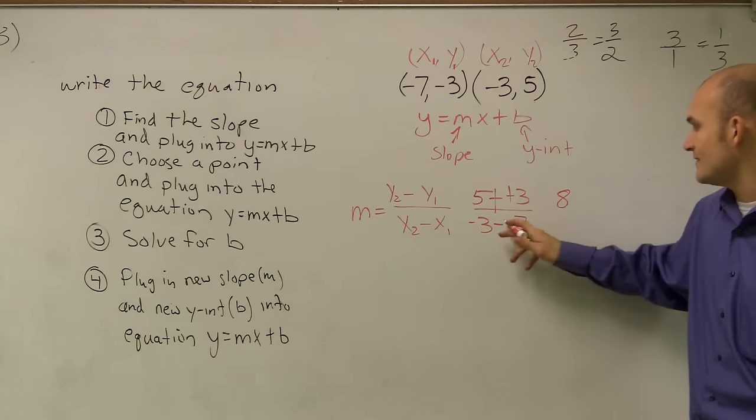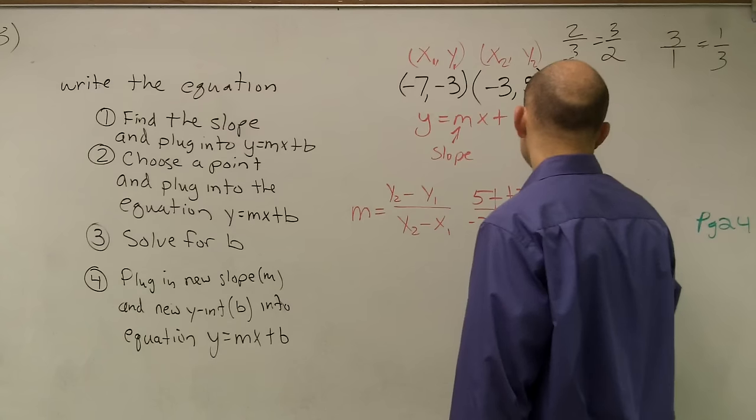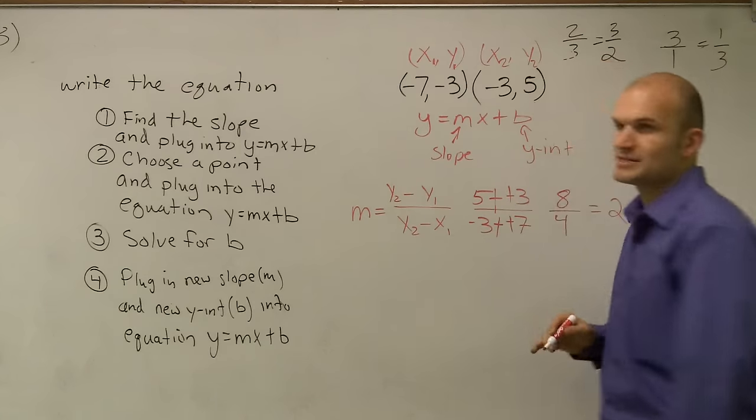Negative 3 minus a negative 7, again, we have a double negative. Negative 3 plus 7 is going to be a positive 4. Therefore, my slope is 2.